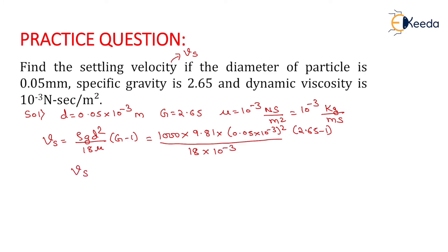The settling velocity equals 2.24 × 10^-3 m/s. Converting to cm/s, we get 0.224 cm/s.